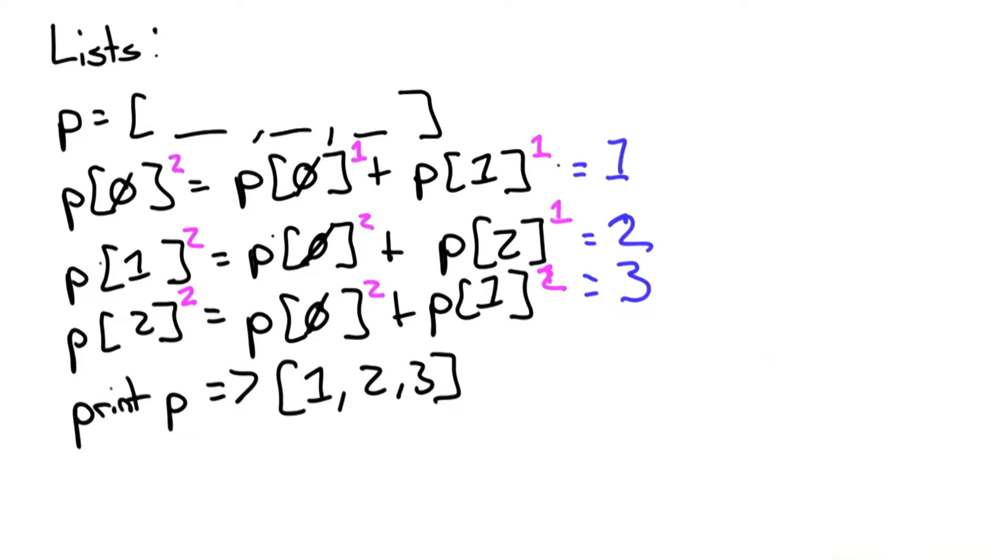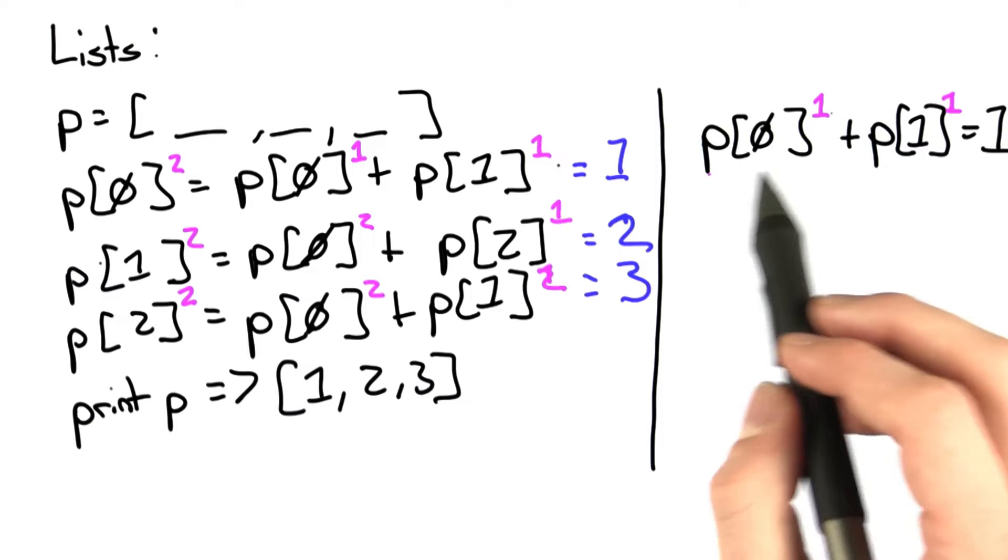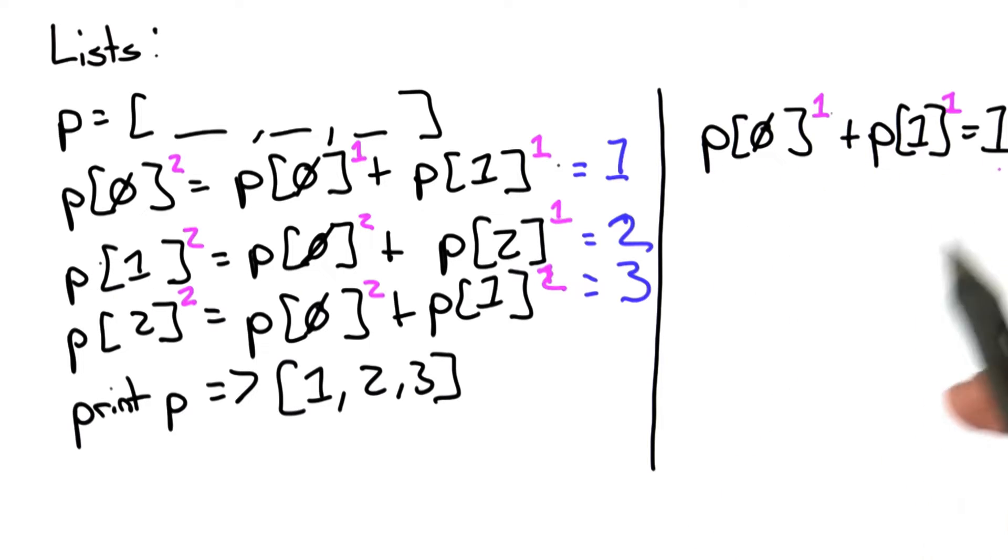So let's do a little algebra. I'm going to rewrite these on the side to make it easier to read. With just this equation, there's nothing we can do. All we know is that the initial values of p[0] and p[1] have to add to 1. We can't get any more specific than that.